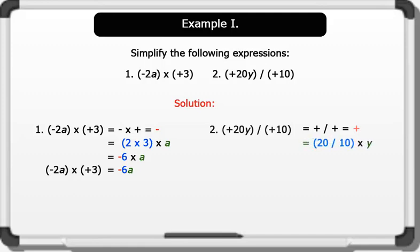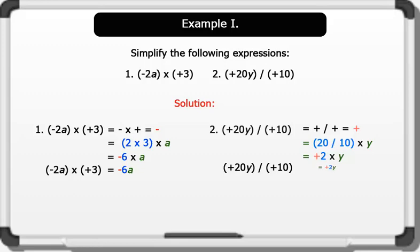2) plus 20y divided by plus 10. According to the rule of directed numbers, plus divided by plus equals plus. That is, 20 divided by 10 times y equals plus 2y. Therefore, plus 20y divided by plus 10 equals plus 2y. That's brilliant!